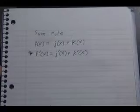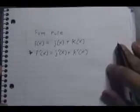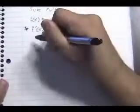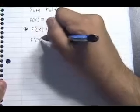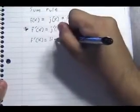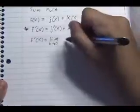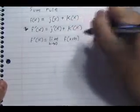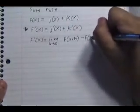In order to prove this, we'll start with the definition of the derivative. f prime of x equals the limit as h approaches 0 of f of x plus h minus f of x over h.